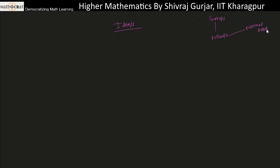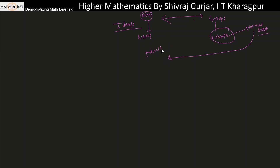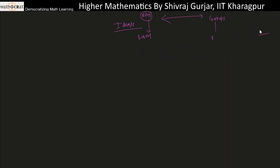If an analogy has to be made between rings and groups, in rings the concept corresponding to subgroups is known as subring, and the concept corresponding to normal subgroups is known as ideals. So roughly we can say that ideals are to rings what normal subgroups are to groups.